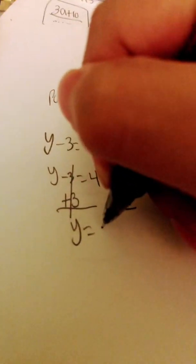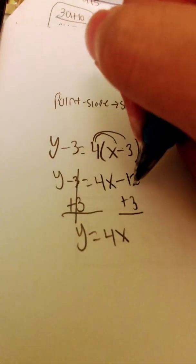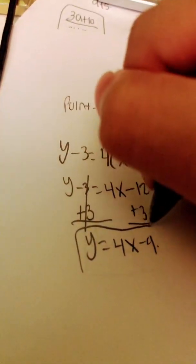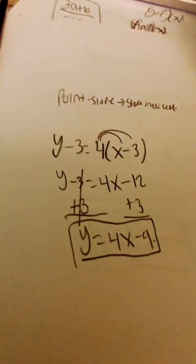I have y is equal to 4x, and then negative 12 plus 3 is negative 9. So this is how you would convert it to slope intercept form.